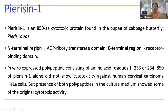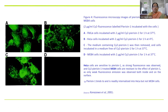Pyresin 1 is an 850 amino acid cytotoxic protein found in the pupae of cabbage butterfly Pieris rapae. It is a protein toxin with an N-terminal region functioning as an ADP ribosyl transferase domain. The C-terminal region is a receptor binding domain. Since it has anti-cancer property, it can bind to receptors of human cells, enter inside, and perform the ribosyl transferase activity. When the N-terminal and C-terminal domains are expressed individually, sometimes the full activity is not found.